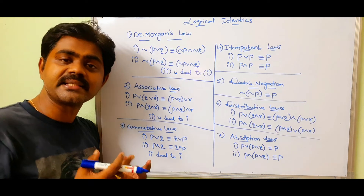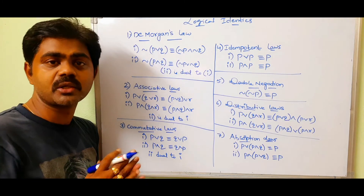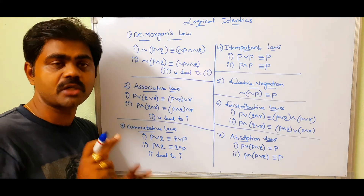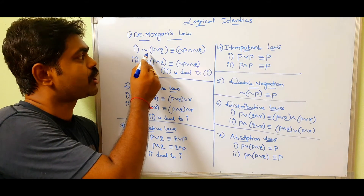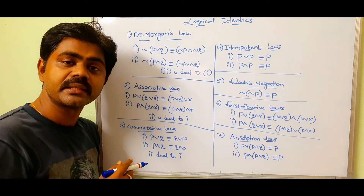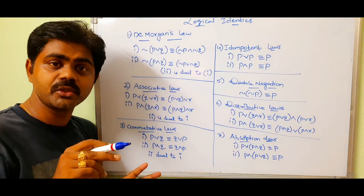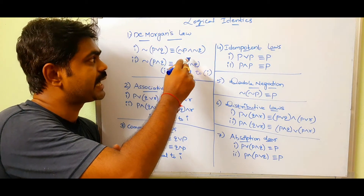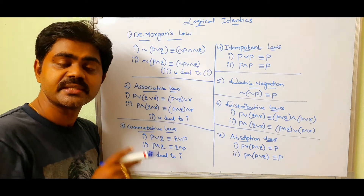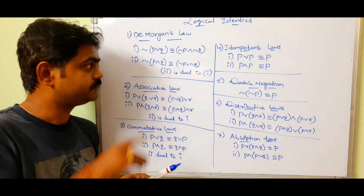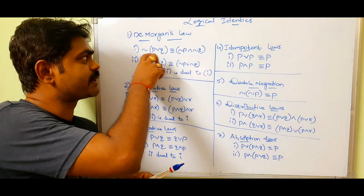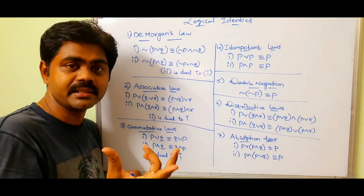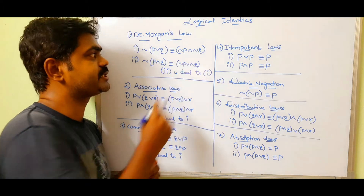Now we will see whether this logical identity is a dual or not. First, coming to De Morgan's law: the negation of P OR Q is equivalent to negation P AND negation Q. So here the negation is common — negation of OR becomes AND. So we get negation P AND negation Q.